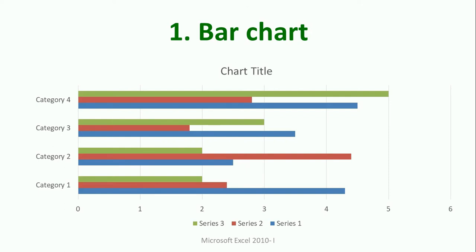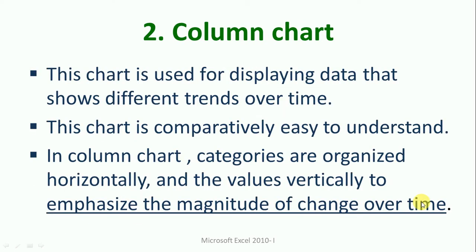In this video we will understand various charts, and in the next video we will cover the remaining five to six charts, then understand each component. Whatever you see on this screen — these are the various components of the chart. The upcoming four to five videos will be on charts only. In the bar chart picture, you can see categories are vertical and the values are horizontal.